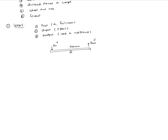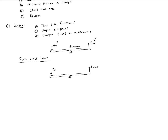Levers are typically classified as three kinds: first class lever, second class lever, and third class lever. First class levers are defined by the fact that the fulcrum or pivot is between the input and the output. The relative location of the input, fulcrum, and output force decides what class a lever belongs to.